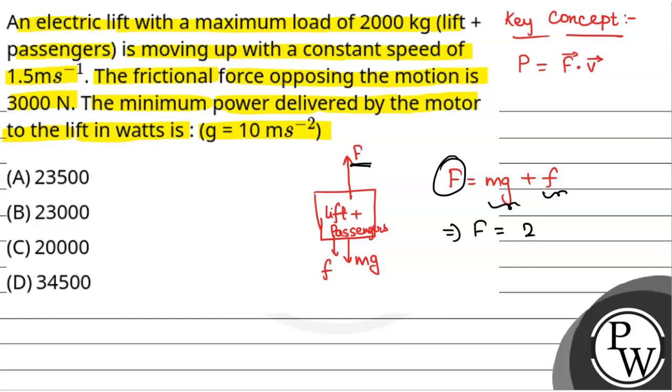Load is 2000 kg, so 2000 into g, that is 10, plus frictional force is given as 3000. So this will be equal to, the force will be equal to 23000 newton.